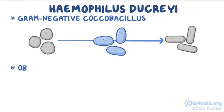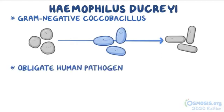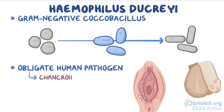Haemophilus ducreyi is an obligate human pathogen and causes a sexually transmitted disease called chancroid.